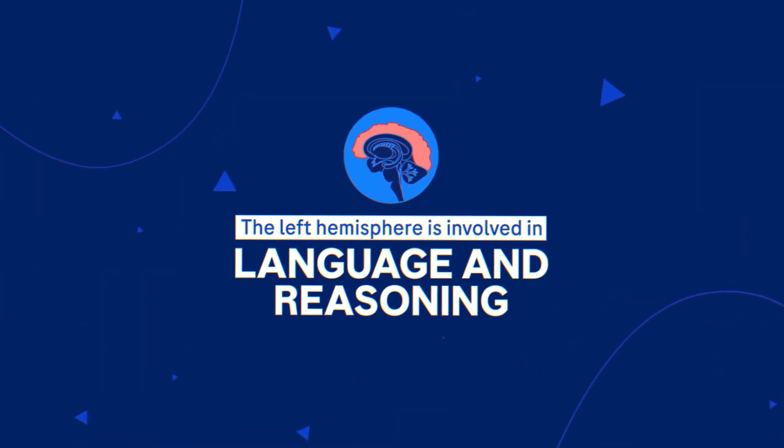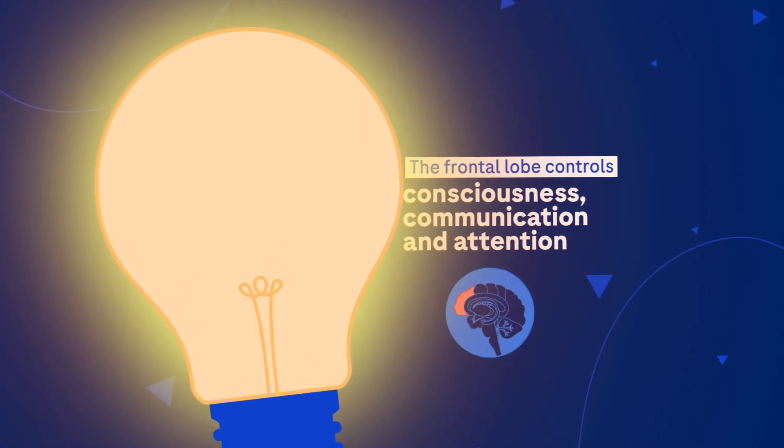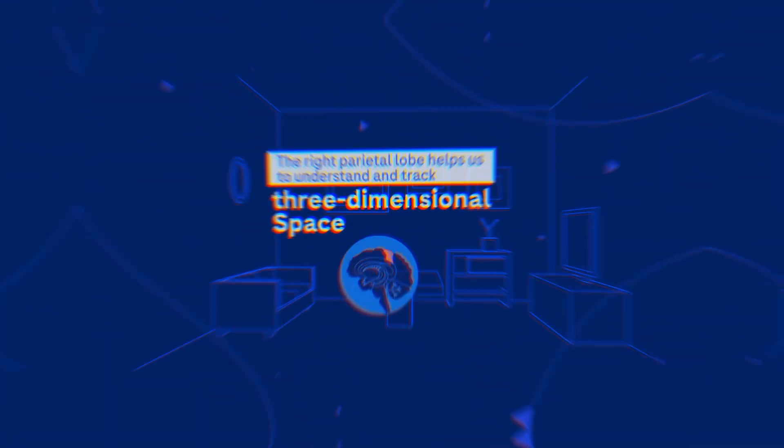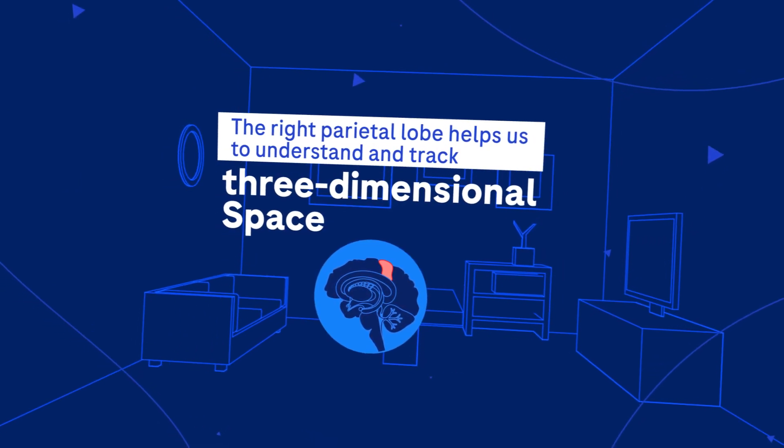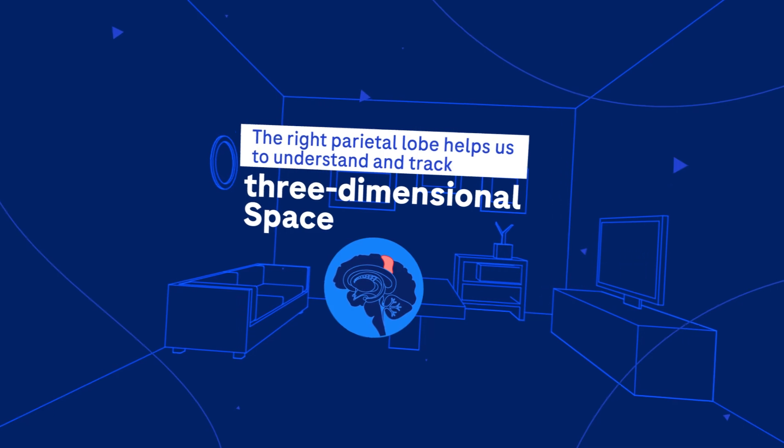The left hemisphere is involved in language and reasoning. The frontal lobe controls consciousness, communication and attention. The right parietal lobe helps us to understand and track the three-dimensional space around us.